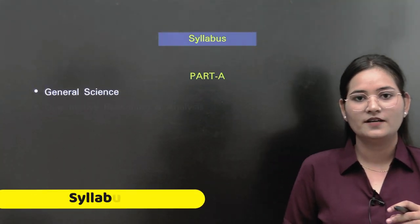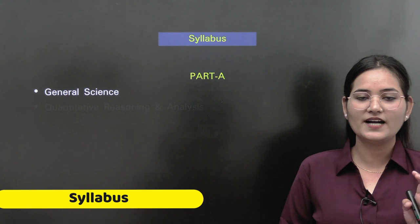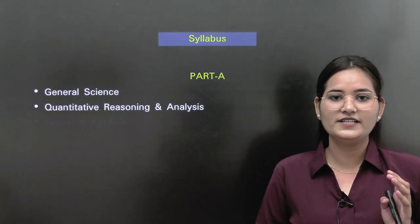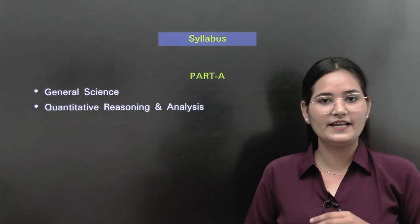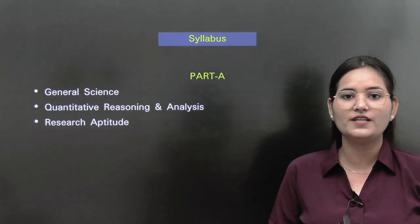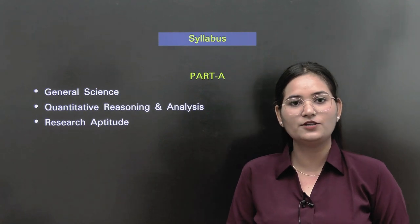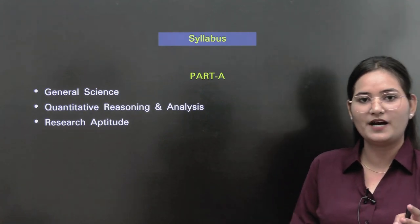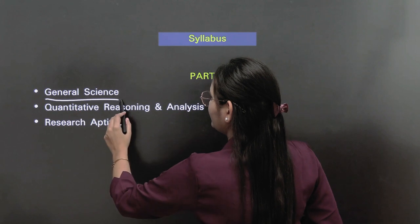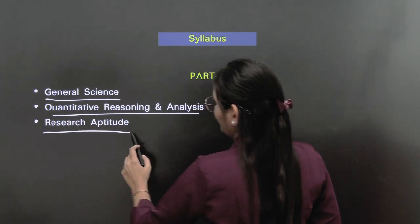Now coming to the syllabus. For Part A, questions are asked from General Science, Quantitative Reasoning and Analysis, and Research Aptitude. So to attempt Part A questions, you need to cover these three areas: General Science, Quantitative Reasoning and Analysis, and Research Aptitude.